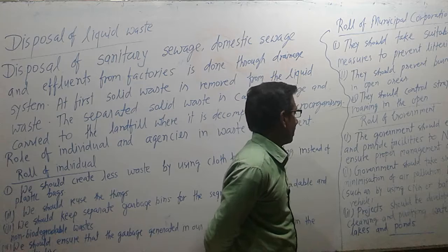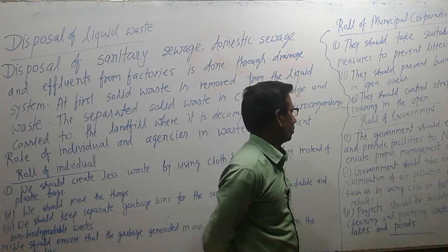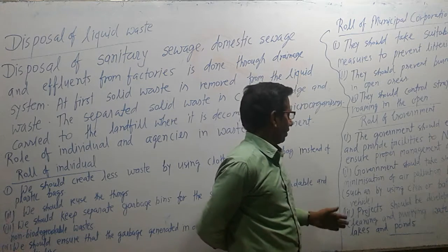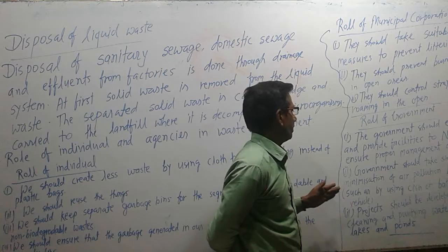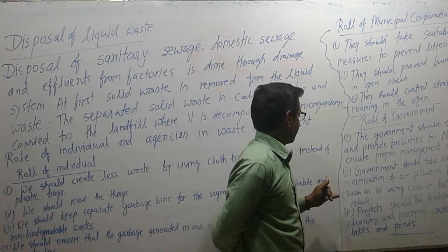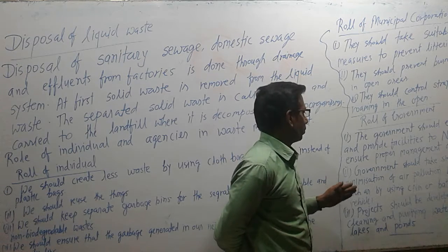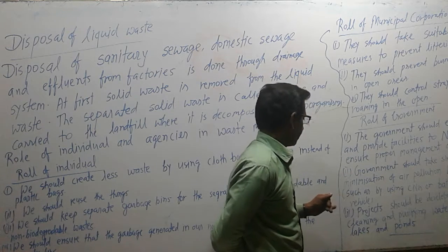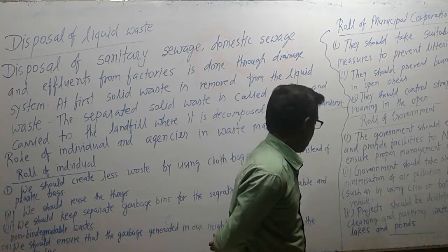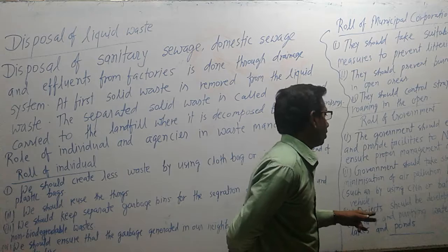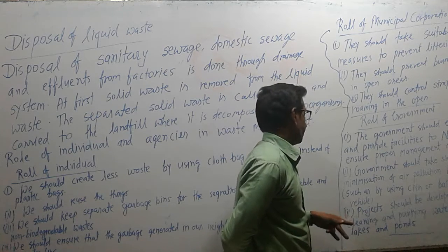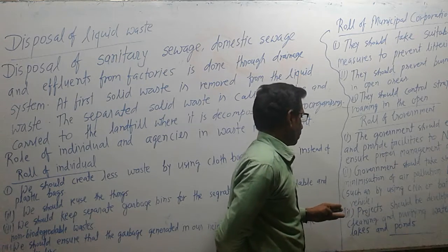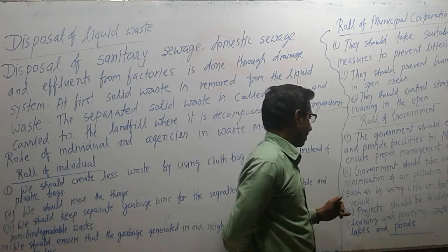The government should take steps to minimize air pollution by automobiles, such as promoting the use of CNG or battery-powered vehicles. Many vehicles on the road use diesel or petrol, which causes a lot of pollution, so it is the duty of the government to provide facilities to vehicles that use CNG or battery. Projects should also be developed for cleaning and purifying the water of rivers, lakes, and ponds.